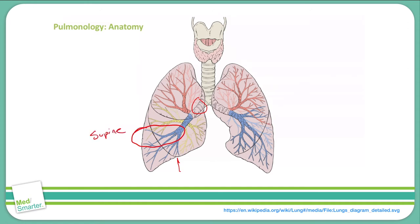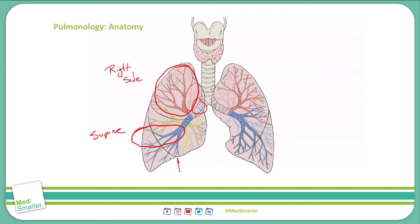If a patient aspirates a foreign body while lying on their right side, that foreign body will usually enter the right upper lobe here. And as we just mentioned, when a patient is standing upright, that foreign body will usually enter the right lower lobe here.